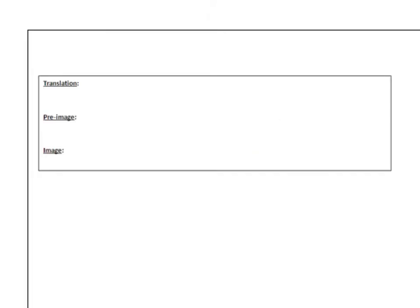A translation is a slide — that's its nickname. Remember a couple of vocab words from 10.1: pre-image is the original image, and when we talk about image, we're talking about the final image, after you've sent it through a transformation. So the pre-image is the original and the image is the final.